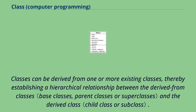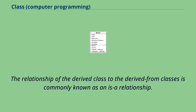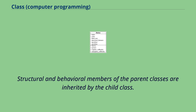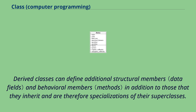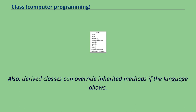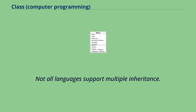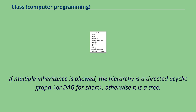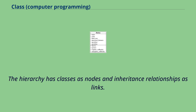Classes can be derived from one or more existing classes, thereby establishing a hierarchical relationship between the derived-from classes and the derived class. The relationship of the derived class to the derived-from classes is commonly known as an 'is-a' relationship. For example, a class Button could be derived from a class Control — therefore, a button is a control. Structural and behavioral members of the parent classes are inherited by the child class. Derived classes can define additional members in addition to those they inherit, and are therefore specializations of their superclasses. Derived classes can also override inherited methods if the language allows. Not all languages support multiple inheritance. For example, Java allows a class to implement multiple interfaces but only inherit from one class. If multiple inheritance is allowed, the hierarchy is a directed acyclic graph; otherwise it is a tree.